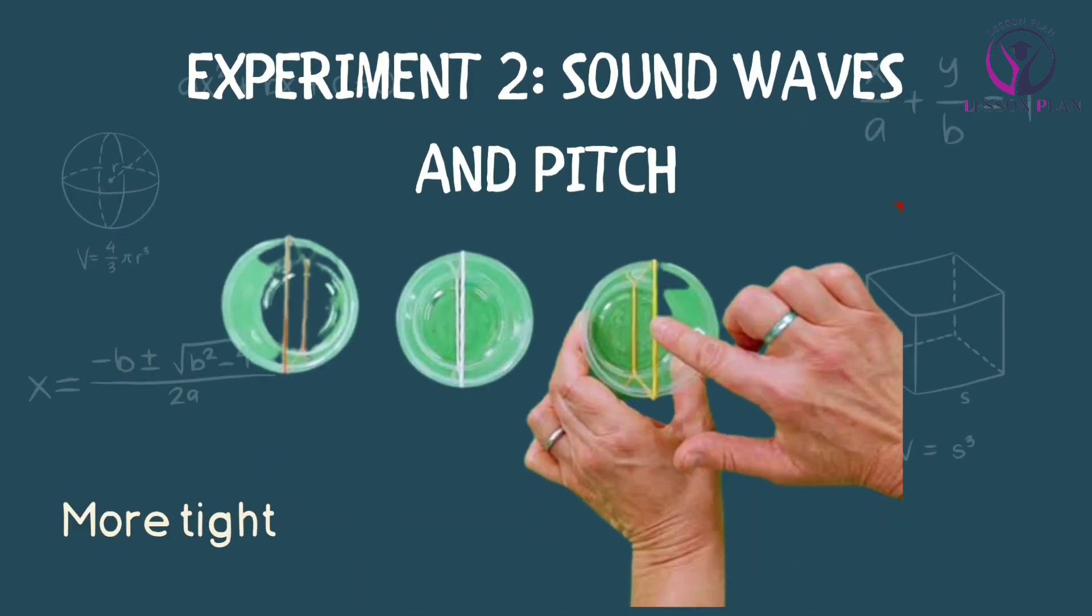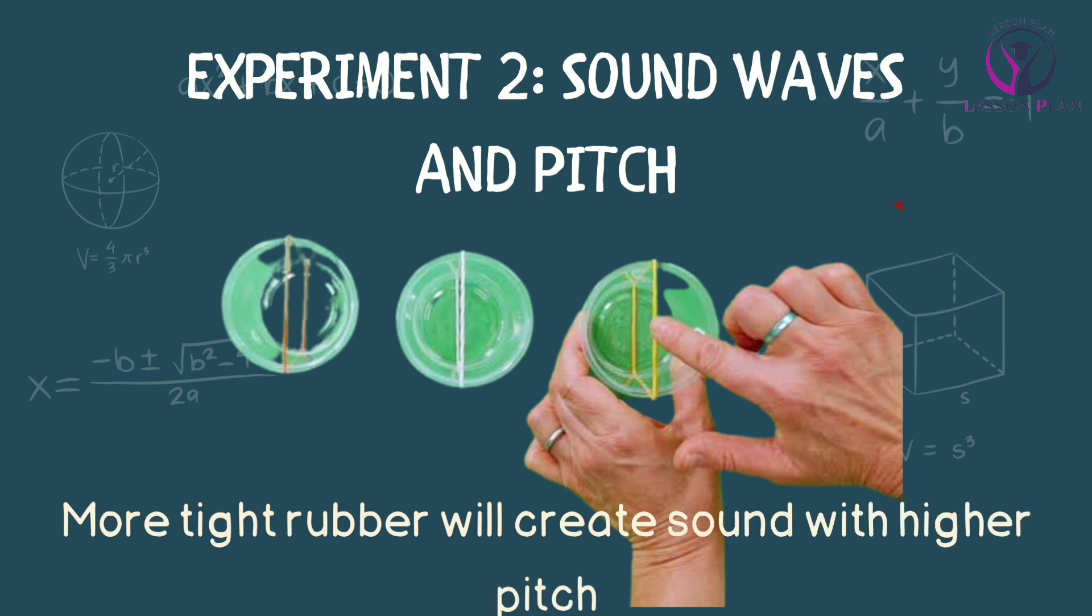Experiment two is about sound waves and pitch. For this experiment, you will need a rubber band and a plastic cup. First, stretch the rubber band across the top of the cup and hold it tightly in place with your fingers. Then pluck the rubber band and listen to the sound it makes.